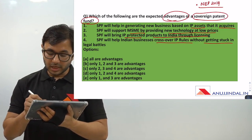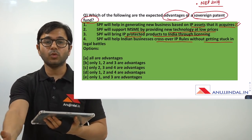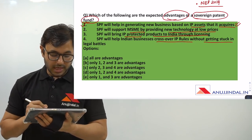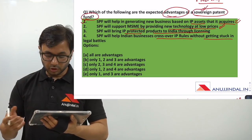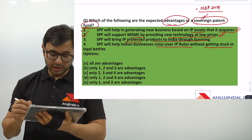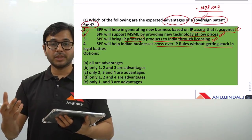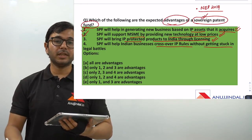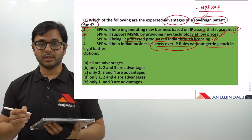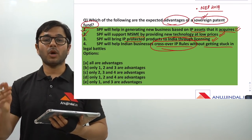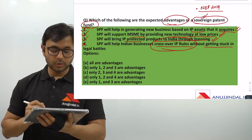Looking at the options: SPF will help in generating new business based on IP assets that it acquires — yes, correct. SPF will support MSMEs by providing new technology at low prices — yes, because it's a sovereign fund, not a private fund. SPF will bring IP-protected products to India through licensing — yes, products from around the world which are IP-protected will be brought to India legally. The fourth option — SPF will help Indian businesses cross over IP rules without getting stuck in legal battles — is incorrect. The purpose is to abide by IP rules, not cross over them. So the answer is options 1, 2, and 3 are advantages.